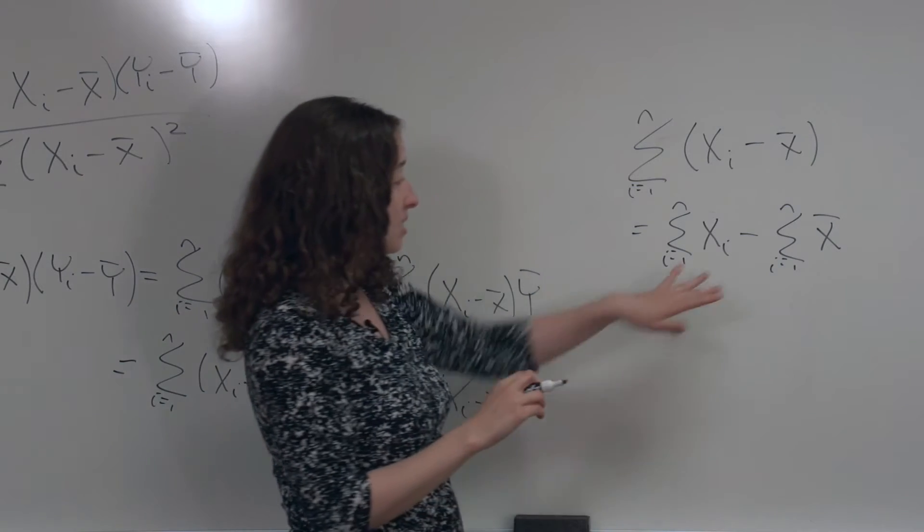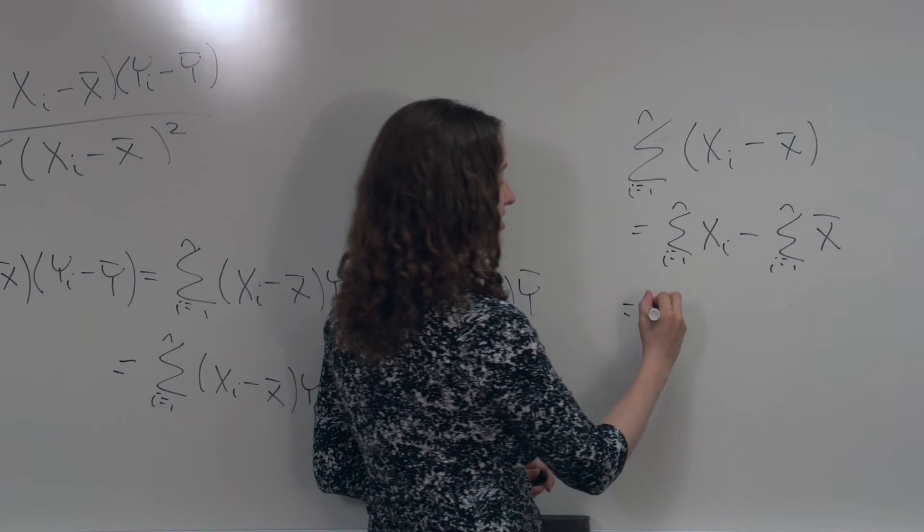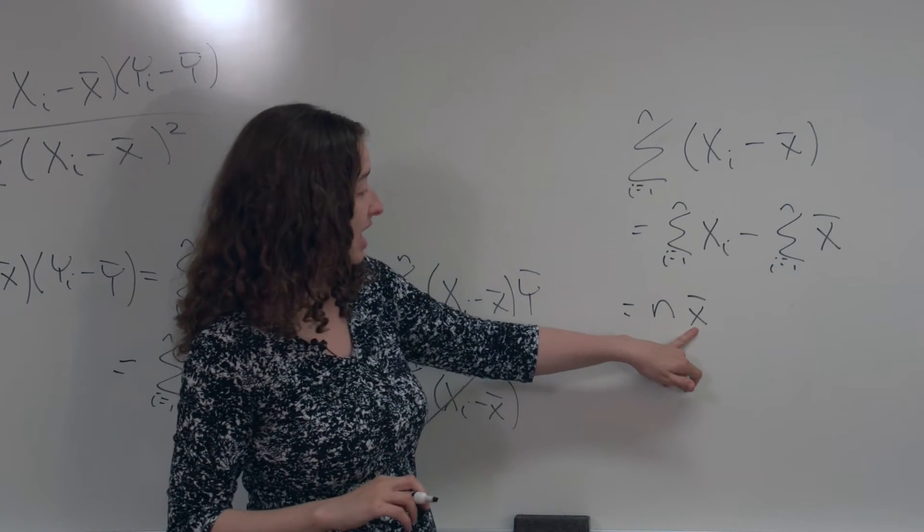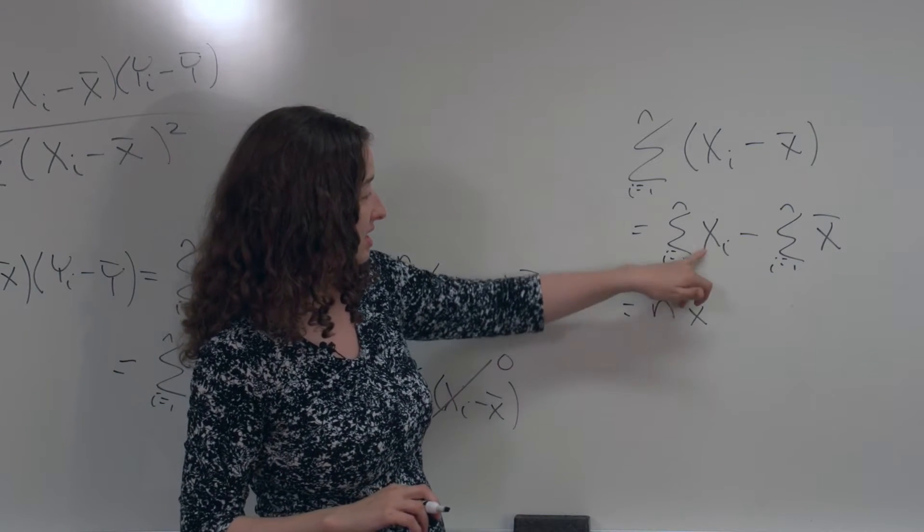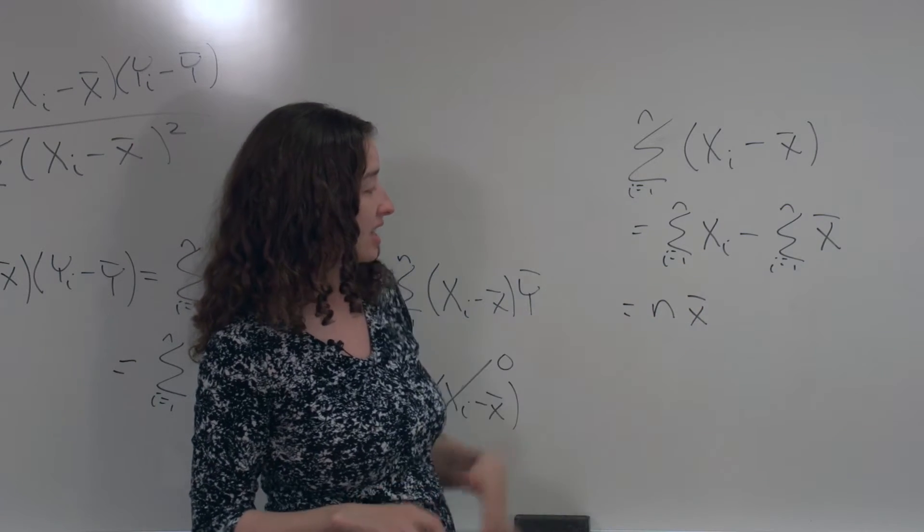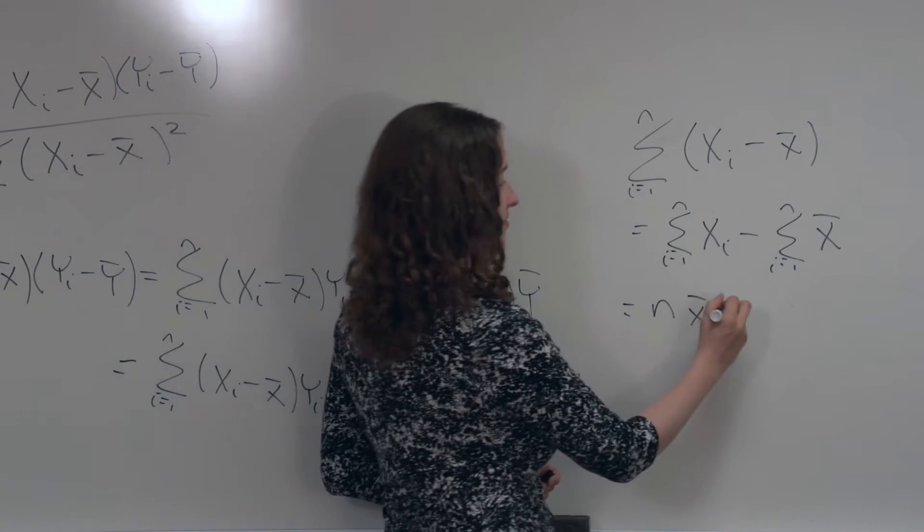But what is the sum of all the x values? Well, that's just n times x bar. Why? Because the sum of all the x values divided by n is x bar.